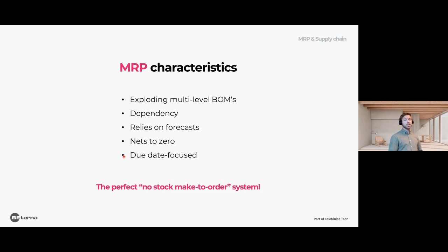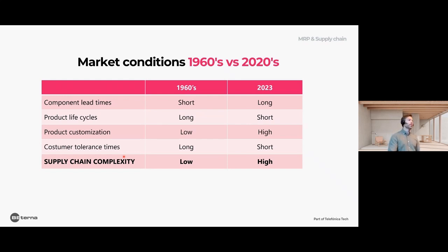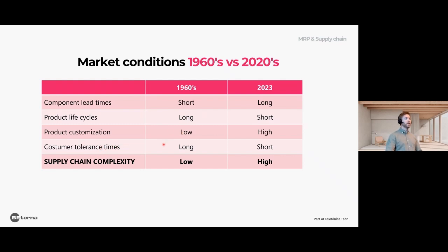A lot has happened since the 1960s when MRP was developed. In general, everything has become more complex. Component lead times have gone from short to long due to increased global trade and overseas sourcing. Product life cycles have gone from long to short. Product customization has gone from low to high, driven by technical development and online trade. Customer tolerance times — how long a customer will wait for delivery — have shrunk dramatically; today you can order online and have delivery the same day or next day in some parts of the world. The overall complexity of everybody's supply chain has increased enormously.